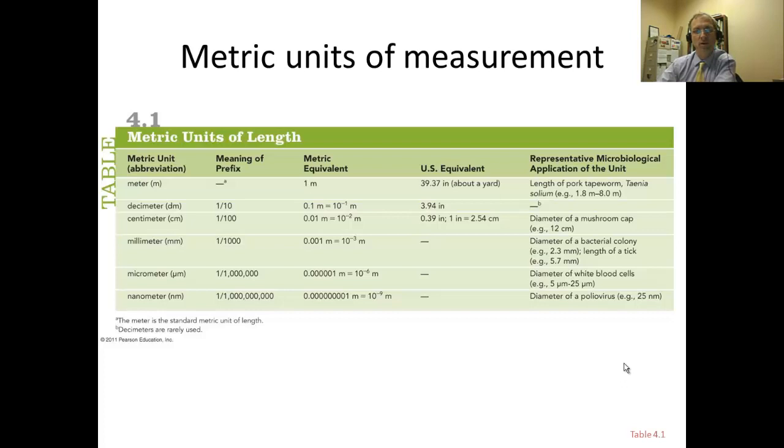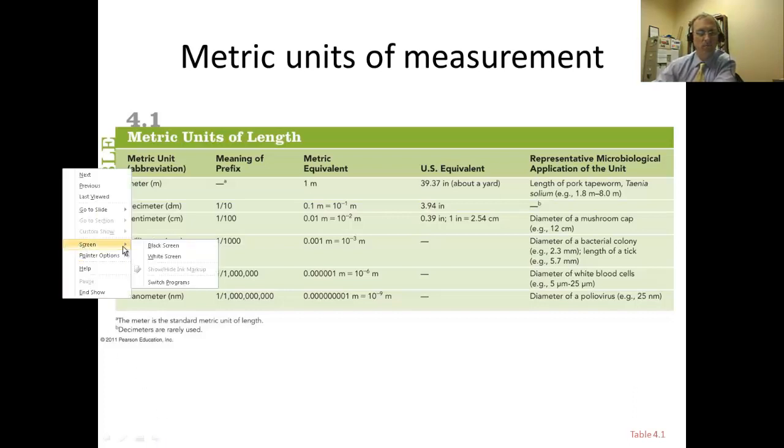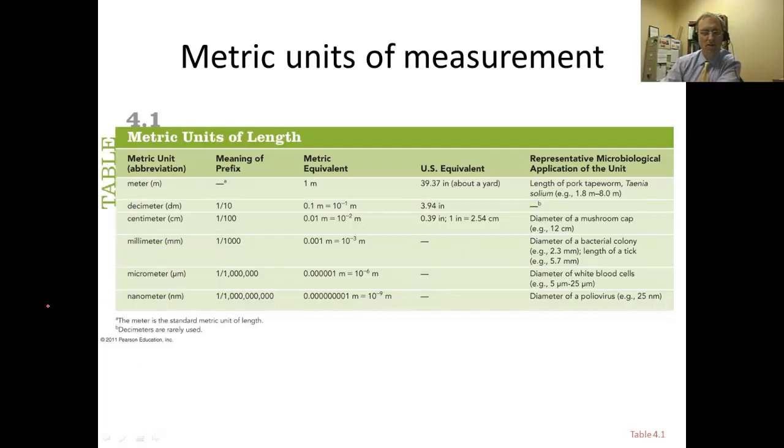To start off, we want to review the units of measurement as used with the metric system. The basic unit of length is the meter, but that's not particularly useful for microorganisms. Most microorganisms are not visible by the naked eye, so the meter is not a useful unit. The main units we'll use are the micrometer, which is one millionth of a meter, and the nanometer, which is one billionth of a meter.